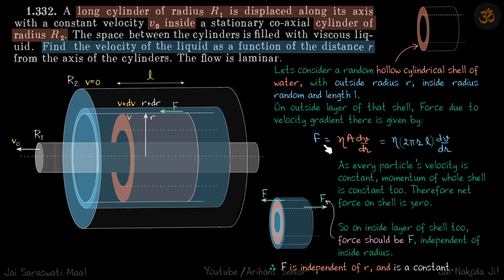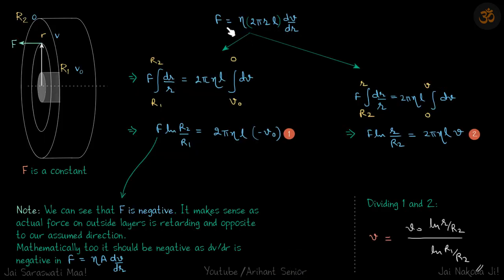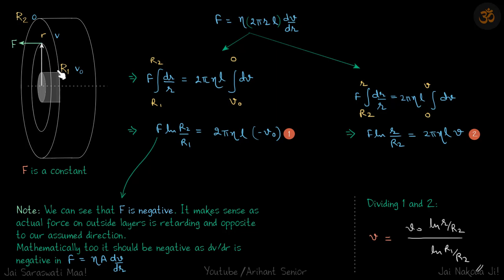Now let's solve this equation treating F as a constant. We rearrange to get F·dr/r = 2πηL·dV. We integrate using two sets of limits: when r goes from r1 to r2, v goes from v₀ to 0; and when r goes from r2 to r, v goes from 0 to v. These limits are chosen so that zero appears in both equations, making them easy to solve.